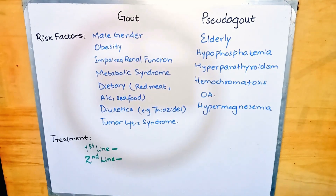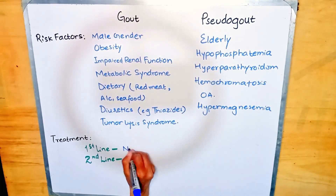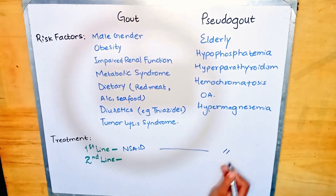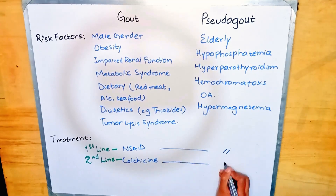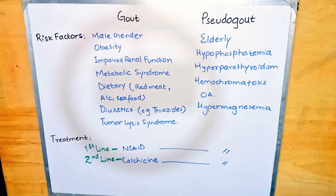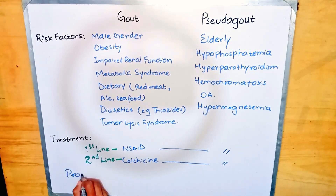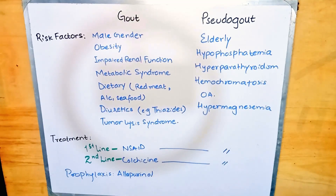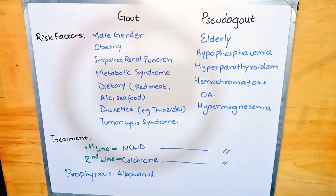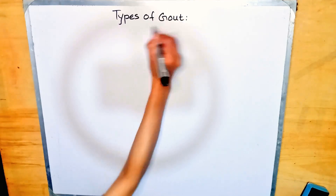For treatment options, the first-line treatment for both gout and pseudo gout is NSAIDs. The second-line treatment for both conditions is colchicine. For prophylaxis, allopurinol is recommended in the case of gout.